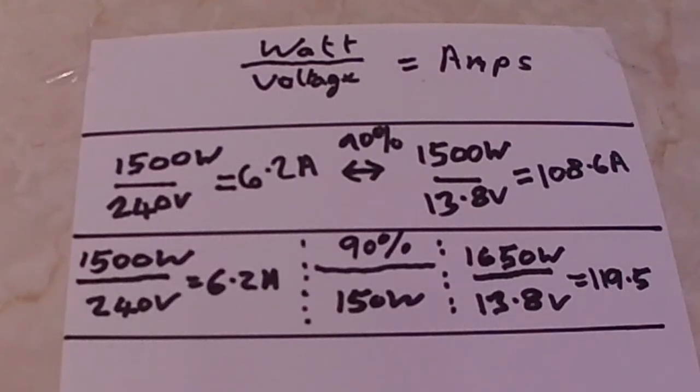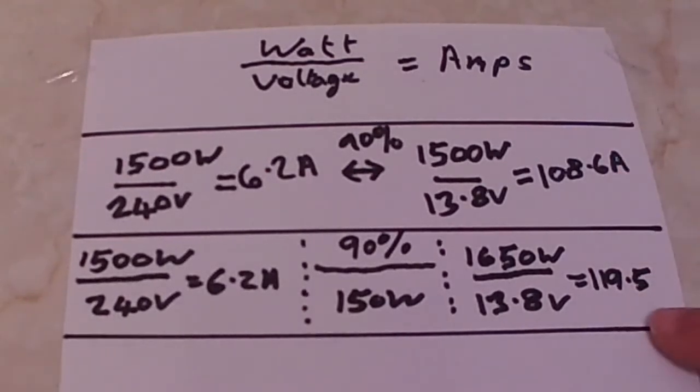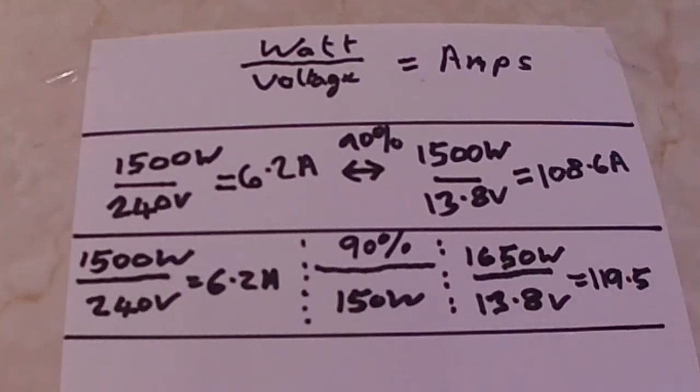And thanks for watching this video. It's just a simple one and it might help answer a few people's questions. And you have to choose your cabling for a worst case scenario. It's no good putting 100 amp cable into your batteries and inverter if you're going to run four or five kilowatt.